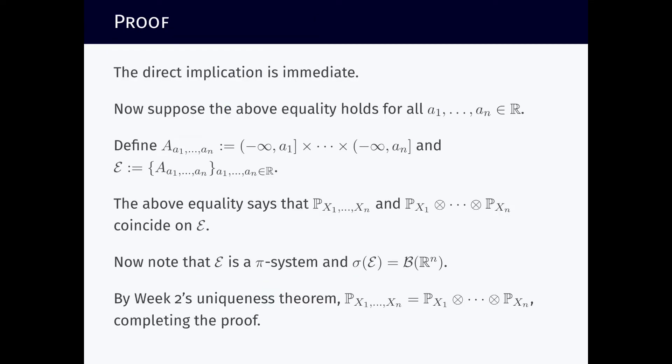So let us move to the proof. As I said, the direct implication is immediate. There is nothing surprising there. Now suppose that we have that equality for every collection of n numbers, for every vector of R^n. So this will be our set. This is a subset of R^n.